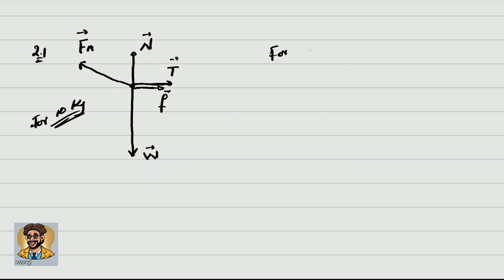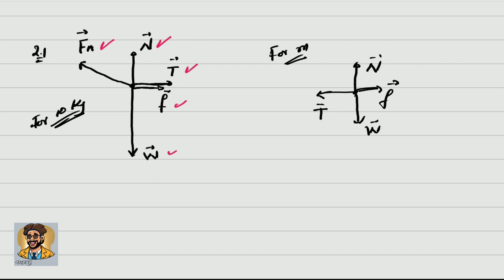They don't ask for it, but we can also do the free body diagram for block M. The forces acting on block M are tension to the front, normal force, weight, and friction. This is the free body diagram for both blocks. You'll get one mark per force, so there are five marks in this specific question.